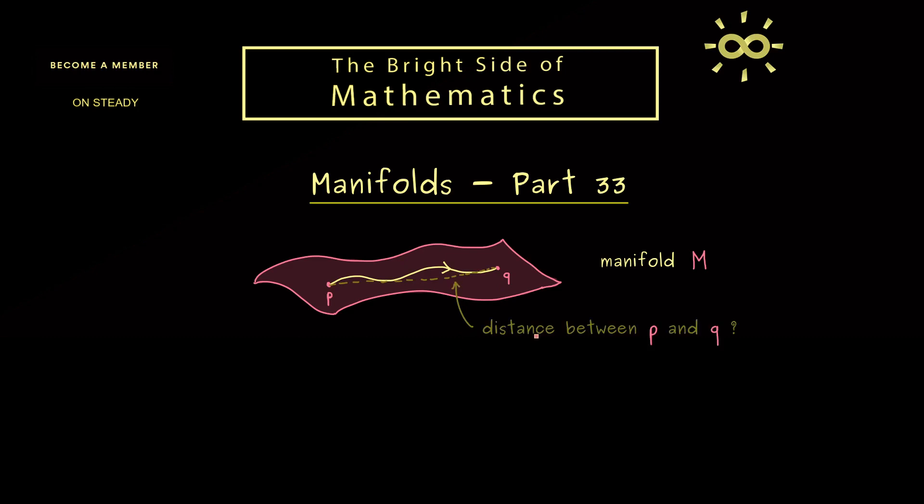Now the problem is that for a general manifold M we cannot measure distances because we just introduced manifolds as topological spaces. This means neighborhoods and closeness make sense for points on the manifold, but not actual numbers for the distance. And then if we want to have this, we have to put more structure to the abstract manifold M.